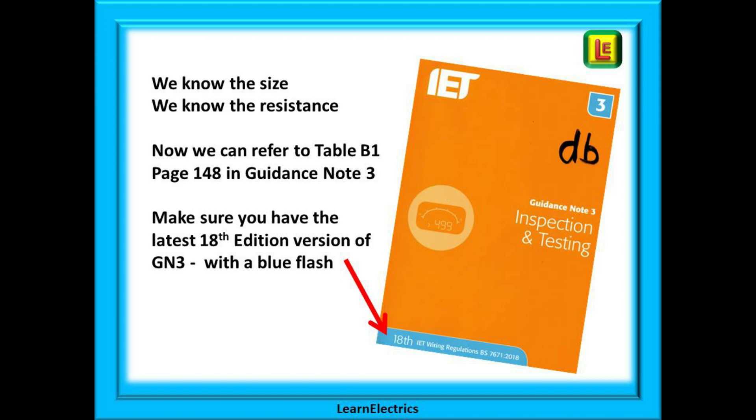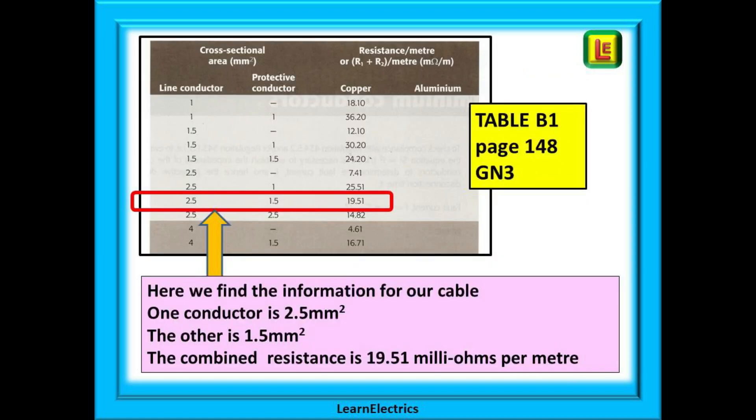Now you will need guidance note 3. I am using the version to 18th edition the one with a blue flash on the front and if you turn to page 148 you will find table B1. Here we can find the information that we need to process our resistance measurement and find the cable length.